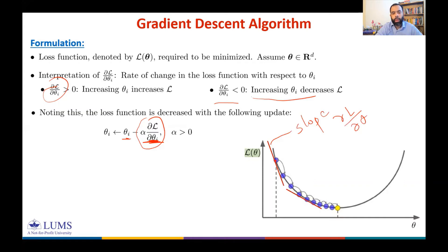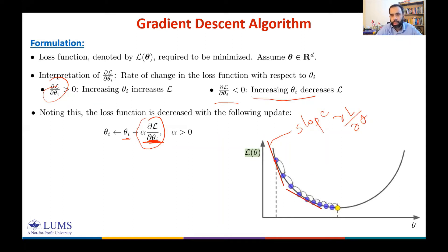Similarly from another point to the left, the slope is again negative and θ moves toward the right. As you approach the optimal point, the slope decreases and the step size also shrinks automatically. Alpha is a fixed positive number here.